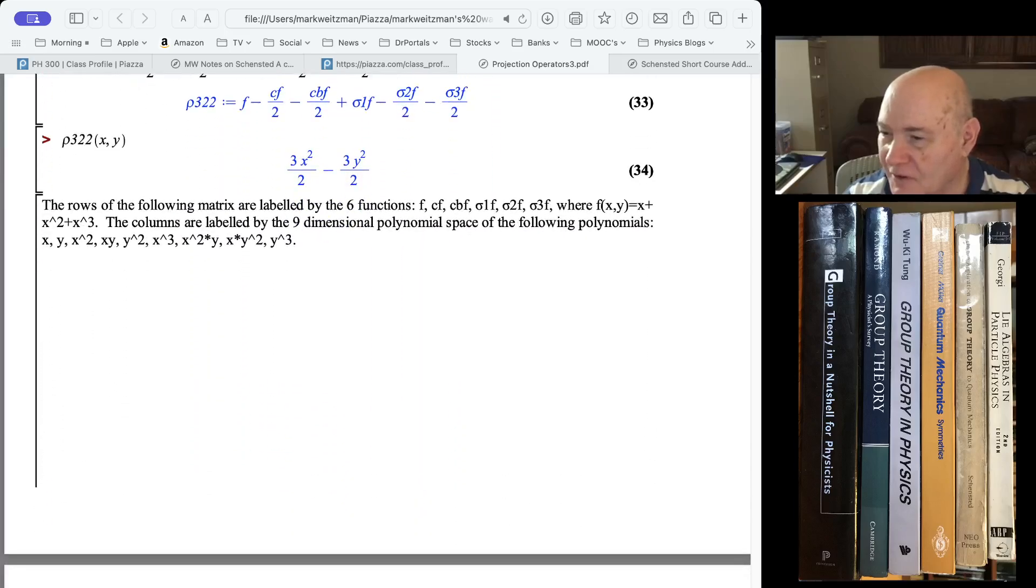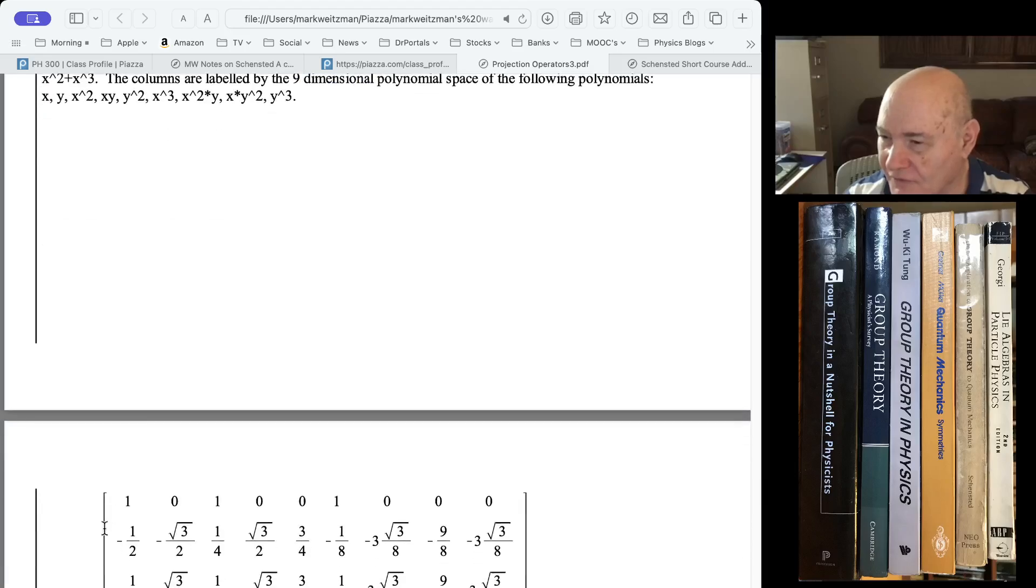And we can form the projection operators. So, for instance, the first one, 1, 1 element, we would have E minus 1 half C, minus 1 half C bar, minus sigma 1, plus 1 half sigma 2, plus 1 half sigma 3.